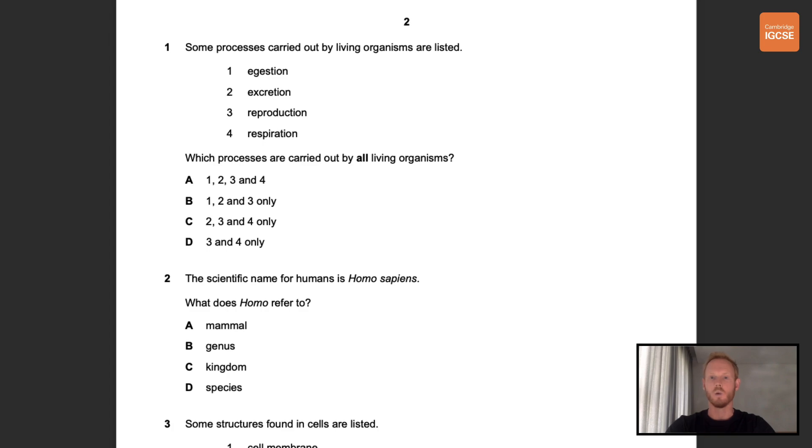Question number one. Some processes carried out by living organisms are listed. Which processes are carried out by all living organisms? So the characteristics of all living organisms are movement, respiration, sensitivity, growth, reproduction, excretion, and nutrition. The only one here that doesn't fit is number one, egestion. So the correct answer is C.